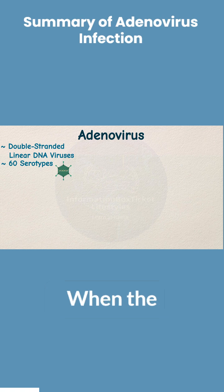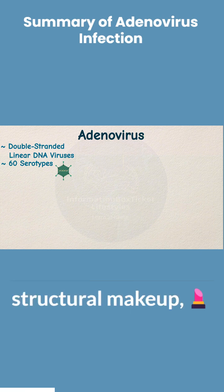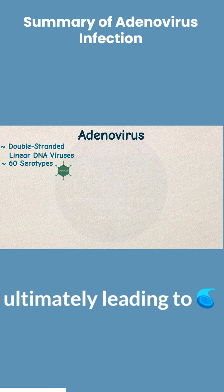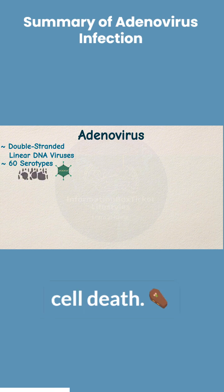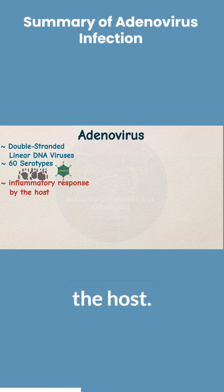When the virus infects epithelial cells, it modifies their structural makeup, causing lysis and ultimately leading to cell death. This also triggers an inflammatory reaction in the host.